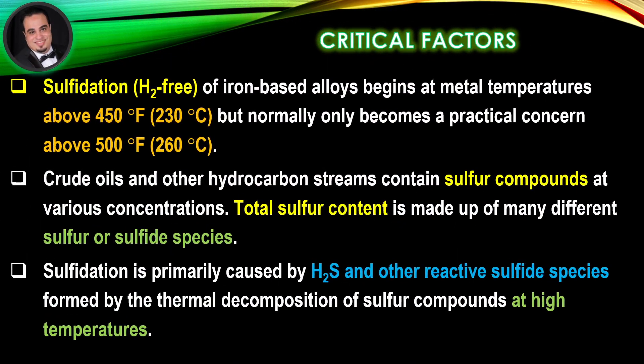Sulfidation of iron-based alloys in the absence of diatomic hydrogen gas begins at metal temperatures above 450°F but normally only becomes a practical concern above 500°F. Crude oils and other hydrocarbon streams contain sulfur compounds at various concentrations. Total sulfur content is made up of many different sulfur or sulfide species. Sulfidation is primarily caused by hydrogen sulfide and other reactive sulfide species formed by the thermal decomposition of sulfur compounds at high temperatures.